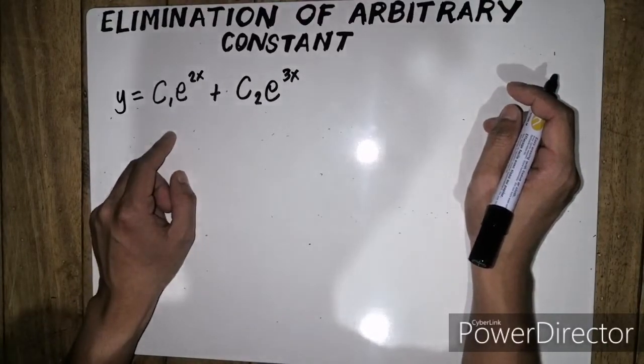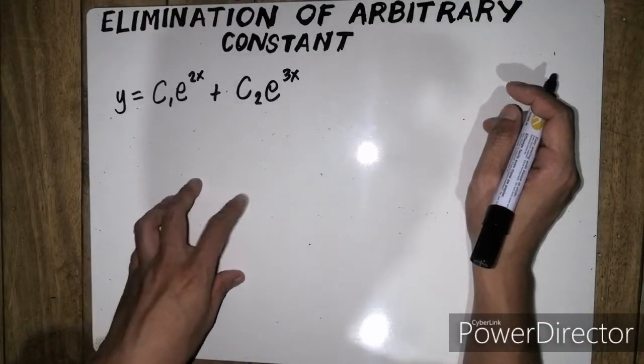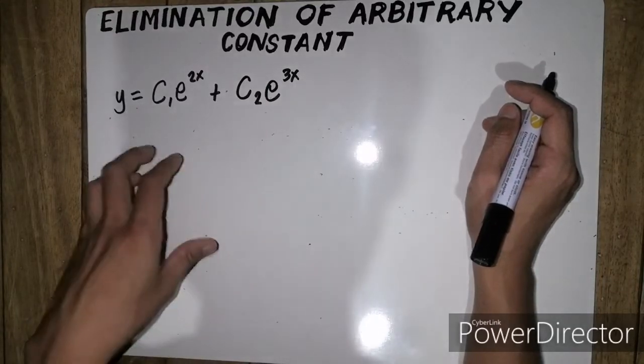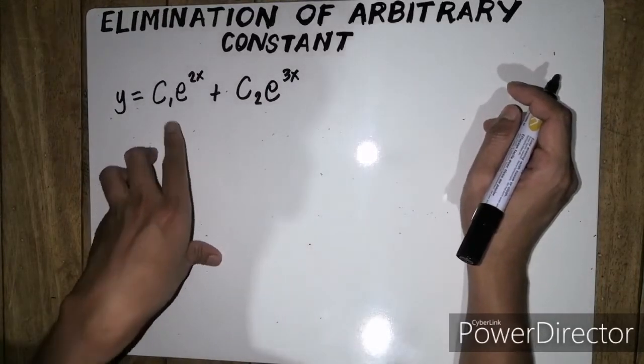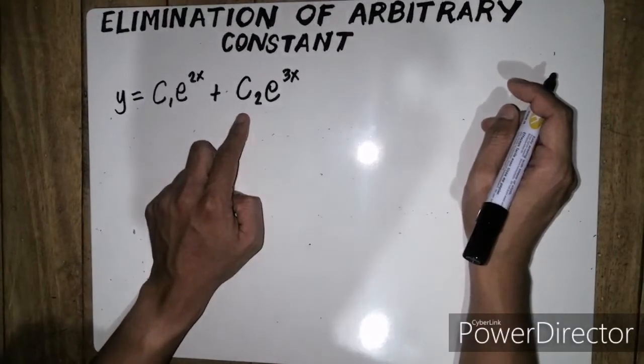In that case, yun yung kung ilan yung arbitrary constant ninyo, ganun din kayo karaming beses na mag-derive. So in this case, we have c1 and c2. That means we have two arbitrary constants.